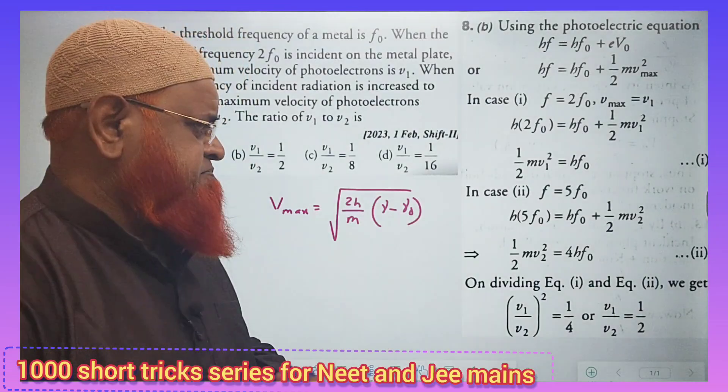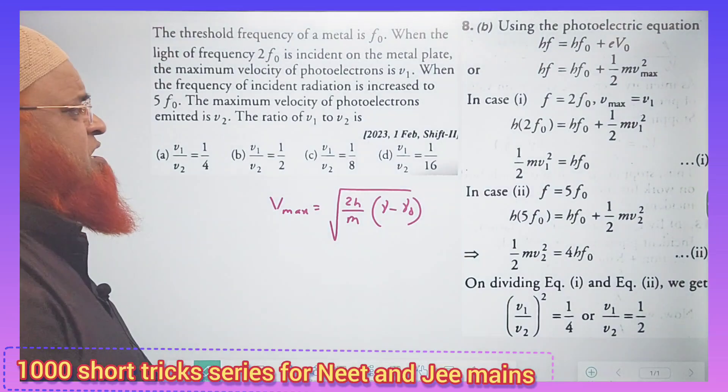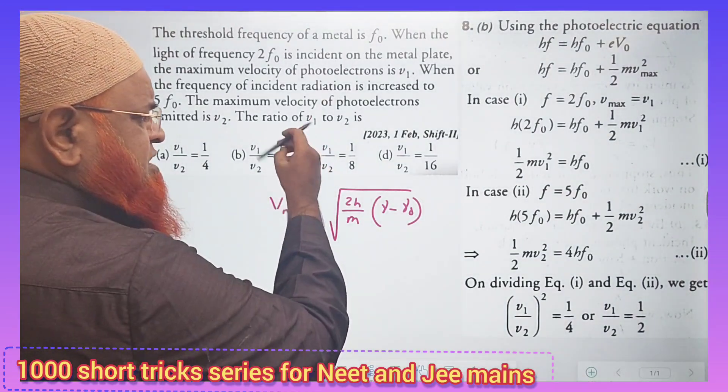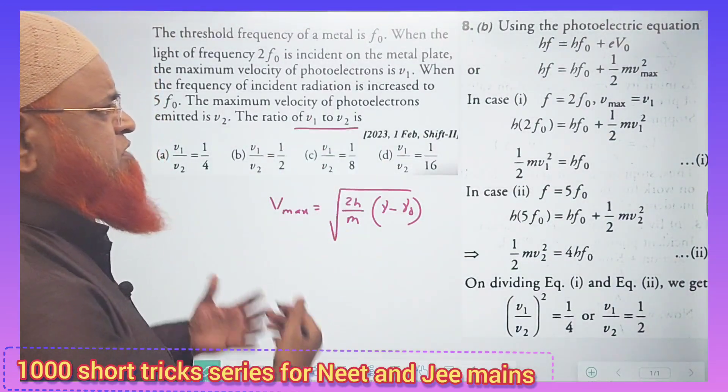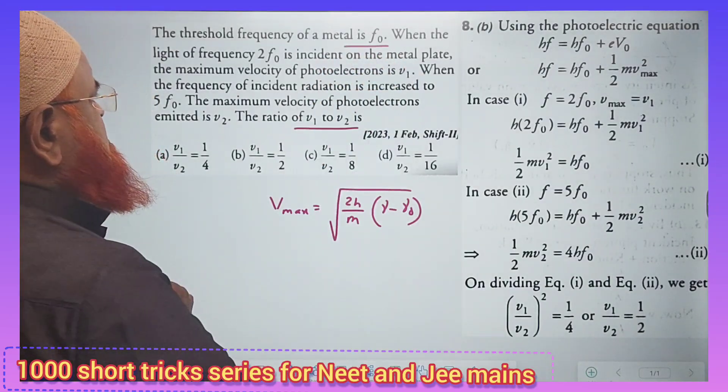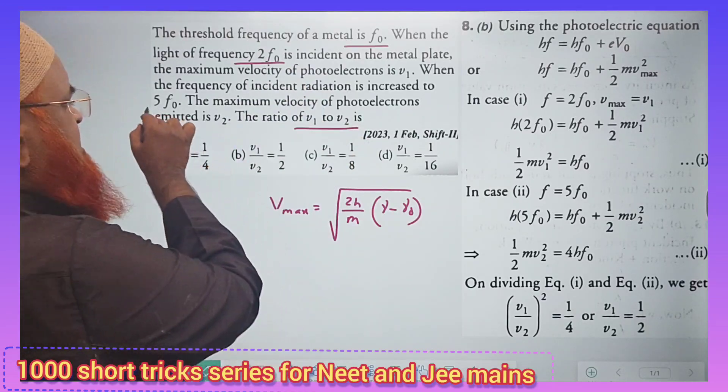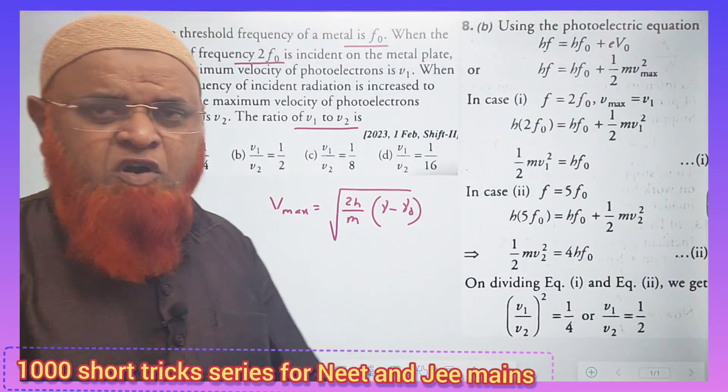Let me discuss how you can solve this one. Instead of doing all this lengthy process, you can just study the problem here. He is asking us to find out the ratio of velocities V1 and V2. And here work function is F0. If the light coming from the sun is 2F0 first and then after that 5F0.